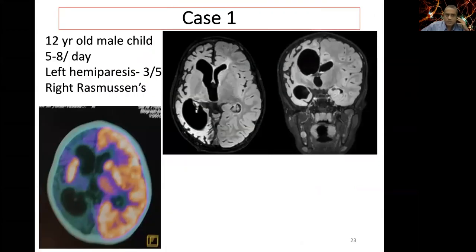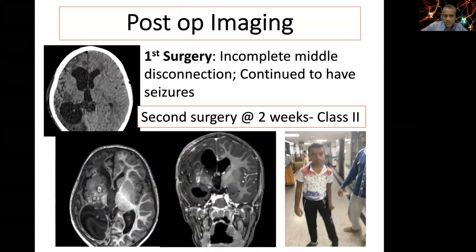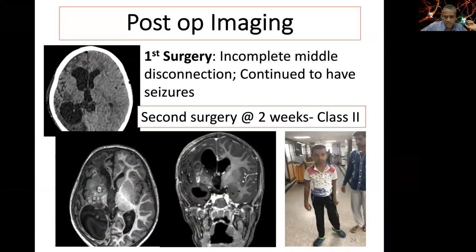First case example: a 12-year-old male with 5 to 8 seizures per day, left hemiparesis, burnt-out Rasmussen's encephalitis with bilateral signal changes. Since there was no corpus callosum or temporal stem, we only needed a middle disconnection. Seizure frequency reduced but continued, and repeat MRI revealed skip areas. Repeat surgery was done after two weeks, achieving class two outcome — not bad considering bilateral changes and burnt-out Rasmussen's.